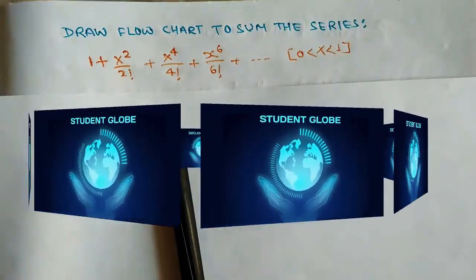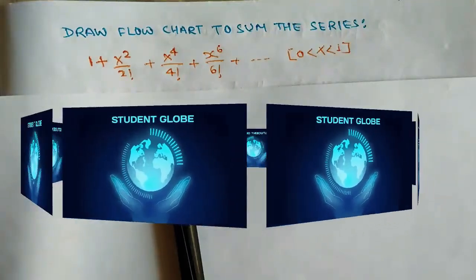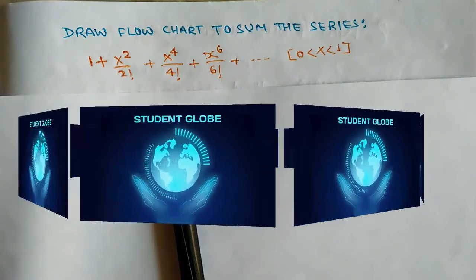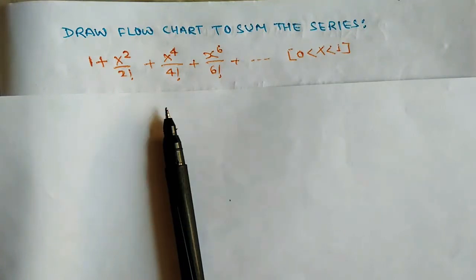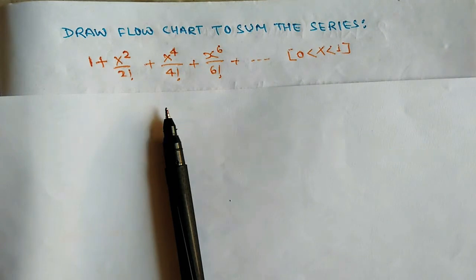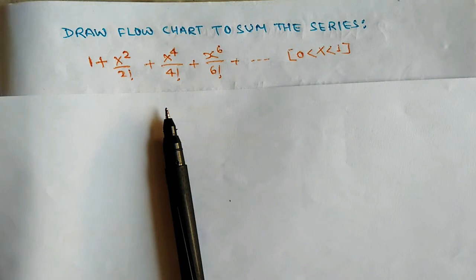Hi everyone, welcome to the student group channel. Today we are going to solve another flowchart related problem. We have to draw a flowchart for the given series: 1 + x²/2! + x⁴/4! and so on, with the condition that x lies between 0 and 1. You will find many flowchart related problems in the description box.